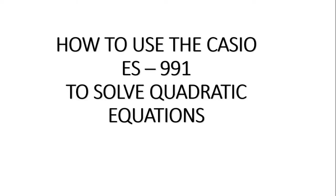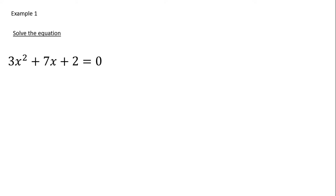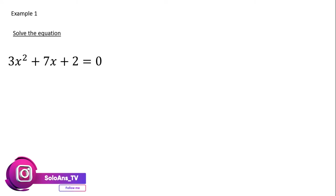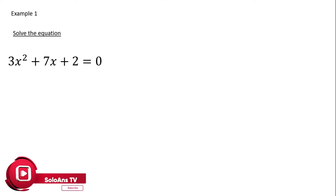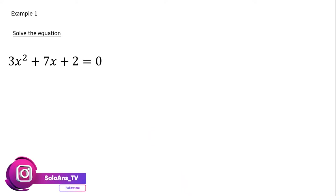Today we want to learn how to use the Casio ES991 calculator to solve quadratic equations. Let's start. Now let's assume that we are having this particular equation: solve the equation 3x squared plus 7x plus 2 being equal to 0. With this particular question, we want to use the calculator to solve that.